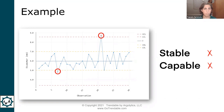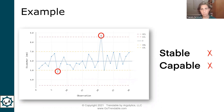Let's look at the simplest example. Say we're a manufacturer of metal tubing and our customer tolerances are between five and seven millimeters for the diameter. We take measurements every 15 minutes and plot those measurements on a control chart in time order. The red lines on this control chart are the control limits, and the yellow lines are the customer specification limits.